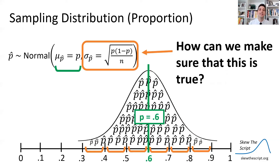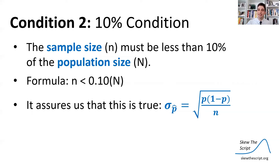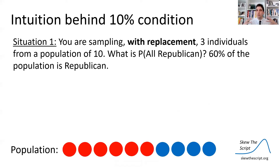But how can we make sure that the formula giving us that standard deviation is valid? We need to satisfy the 10% condition. The 10% condition states that the sample size — the number of people per poll — must be less than 10% of the population size, i.e. the population of Wisconsin voters. If this is satisfied, we can assume the formula for the standard deviation of our sampling distribution is true. Here's a somewhat intuitive explanation of why.